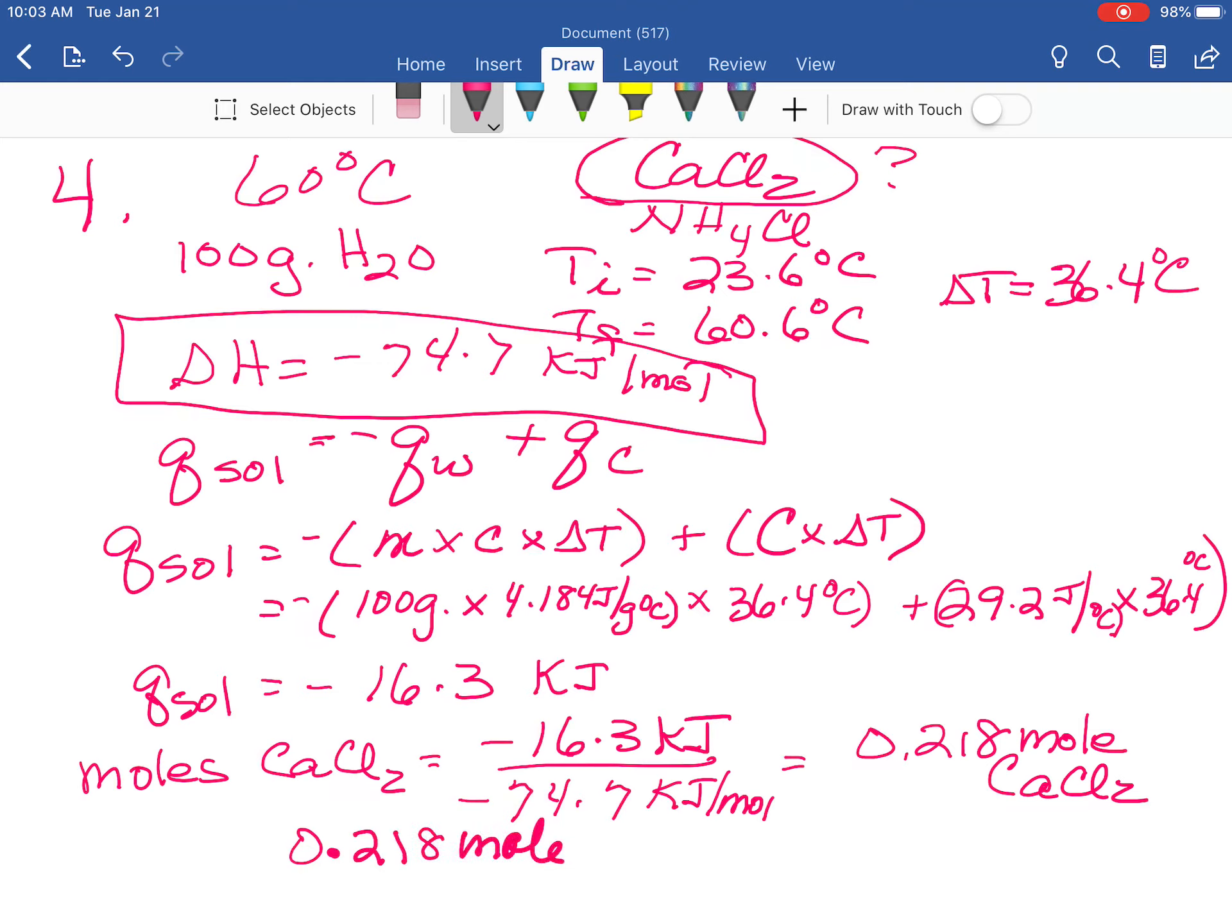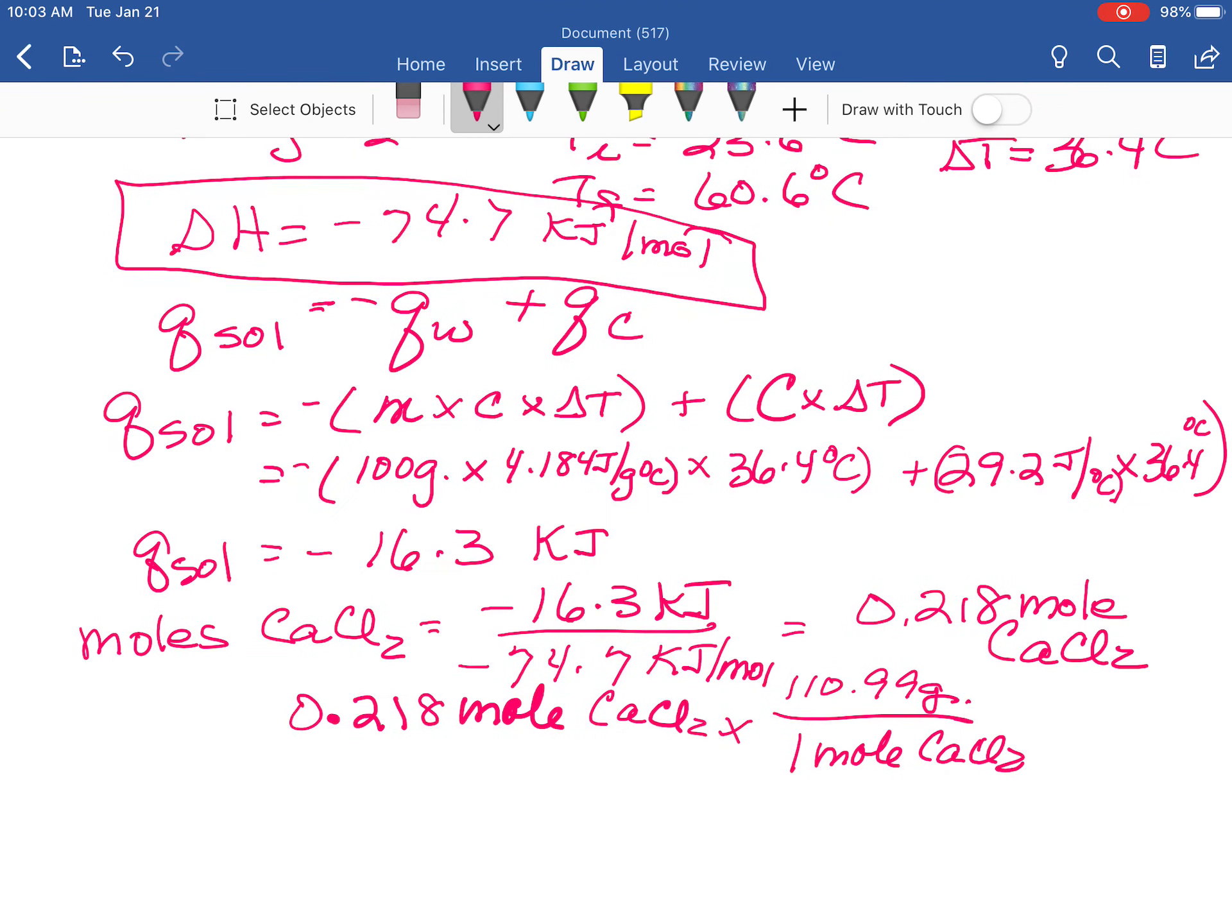We can then use stoichiometry to figure out how many grams that would be. So we have our 0.218 moles of calcium chloride, and then one mole of calcium chloride is 110.99 grams. And so you will need 24.2 grams of calcium chloride to reach a temperature of 60 degrees Celsius.